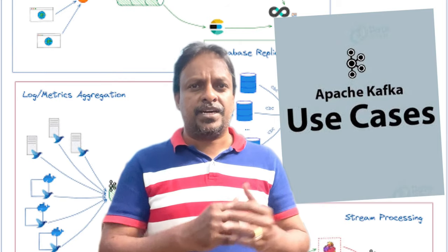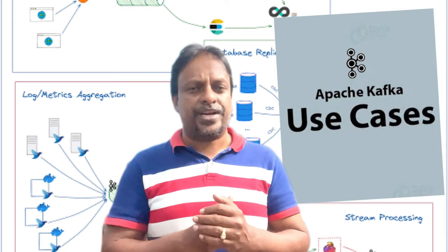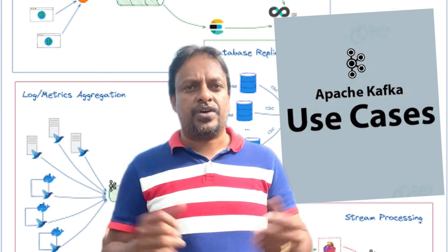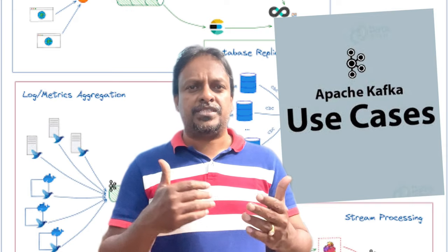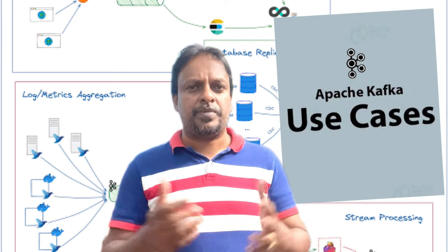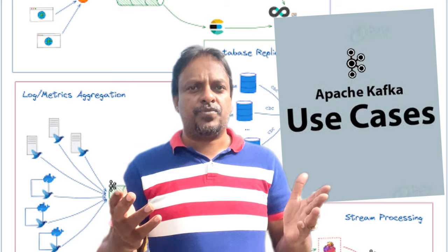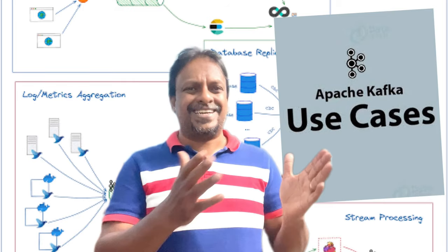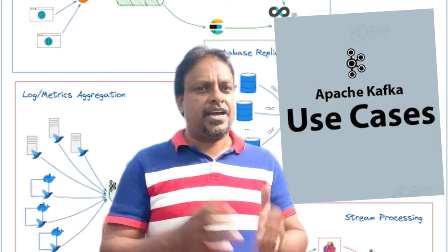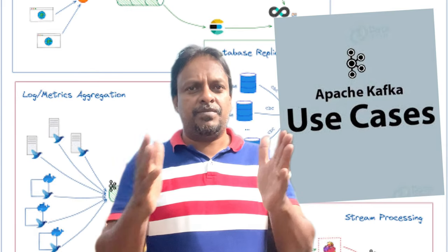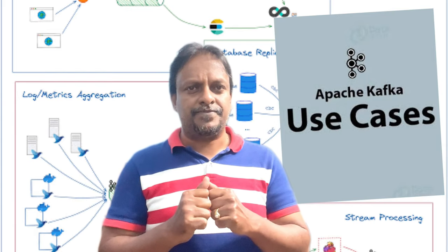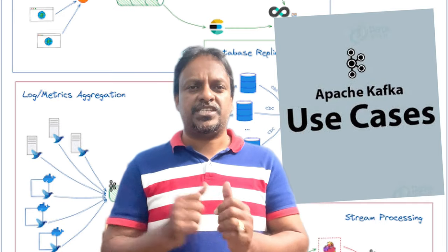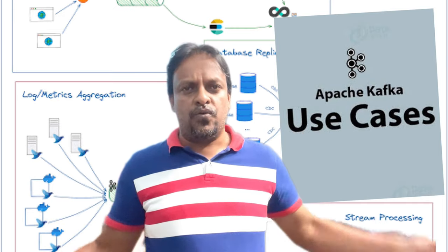The third one is message queuing. If you are using a messaging architecture, we can go for Kafka. Kafka is very fast to stream messages. We can create multiple publishers and multiple subscribers, with Kafka in the center to stream the messages.